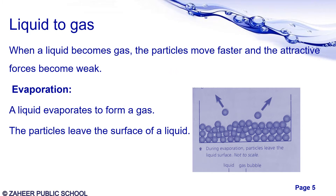Now, the conversion of liquid into gas: when liquid becomes gas, the particles move faster and the attractive force between them becomes weak. You may observe the conversion of liquid to gas in evaporation. In evaporation, liquid evaporates to form gas, and during this evaporation the particles leave the surface of the liquid. You can see the molecules escaping from the outer surface in the given diagram.